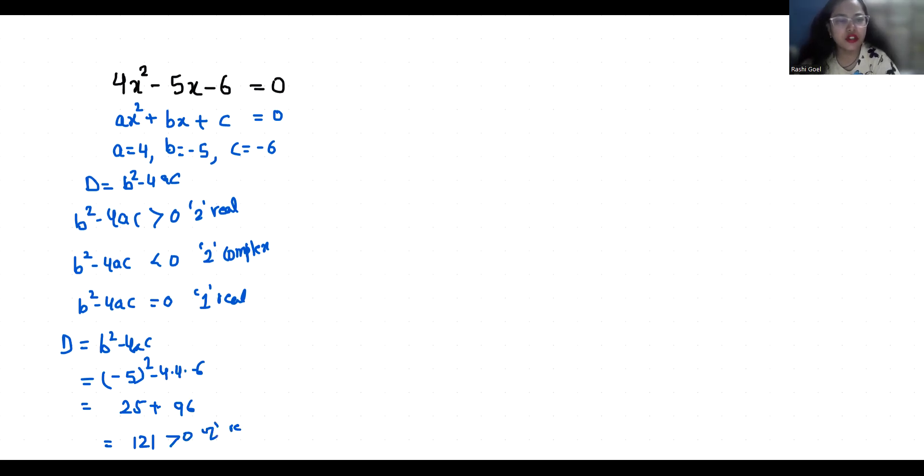Let's find out the real solutions or roots. Method 1: 4x² - 5x - 6 = 0. I am going to use quadratic formula: x = (-b ± √(b² - 4ac)) / 2a.